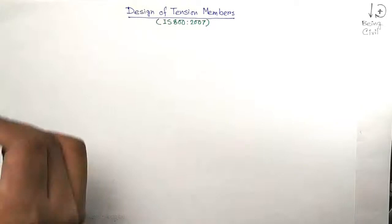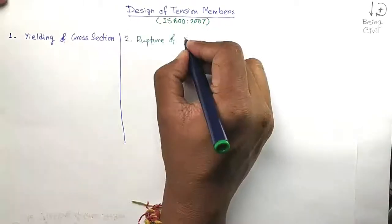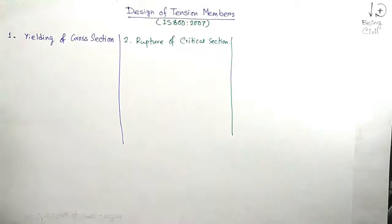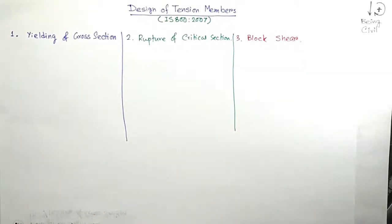So we have three types of failure of members in tension: Number 1, yielding of gross section; Number 2, rupture of critical section; and Number 3, block shear. These are three types of failure the member can undergo due to tension.